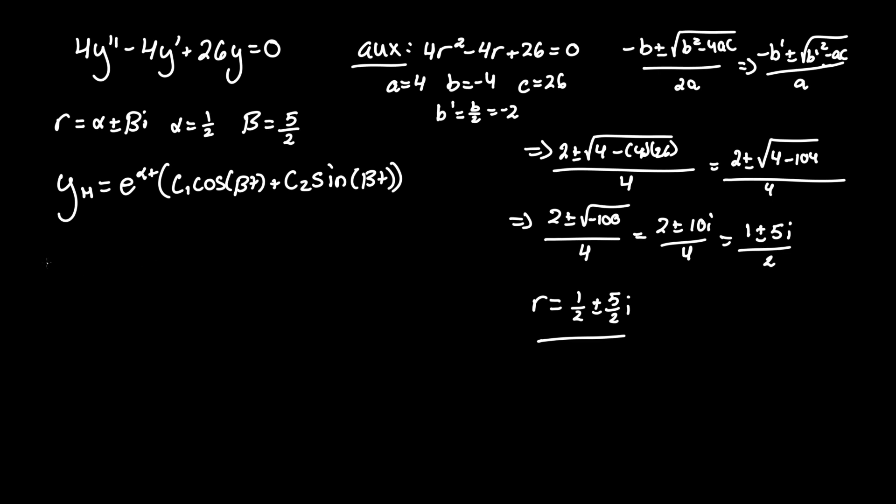We keep c's to allow for infinite solutions and y homogeneous, plugging in alpha and beta, equals e to the t over 2, or just 1 half t, times c1 cosine of 5 halves t plus c2 sine of 5 halves t.